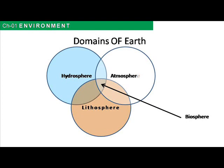Lithosphere: the word lithosphere originated from the ancient Greek words 'lithos' meaning rock and 'sphaira' meaning sphere. It is the rigid outermost layer of the Earth, defined by its rigid mechanical properties. On Earth, it is composed of the crust and the portion of the upper mantle that behaves elastically on timescales of thousands of years or greater. The crust is the outermost layer of the rocky planet, defined on the basis of its structure.